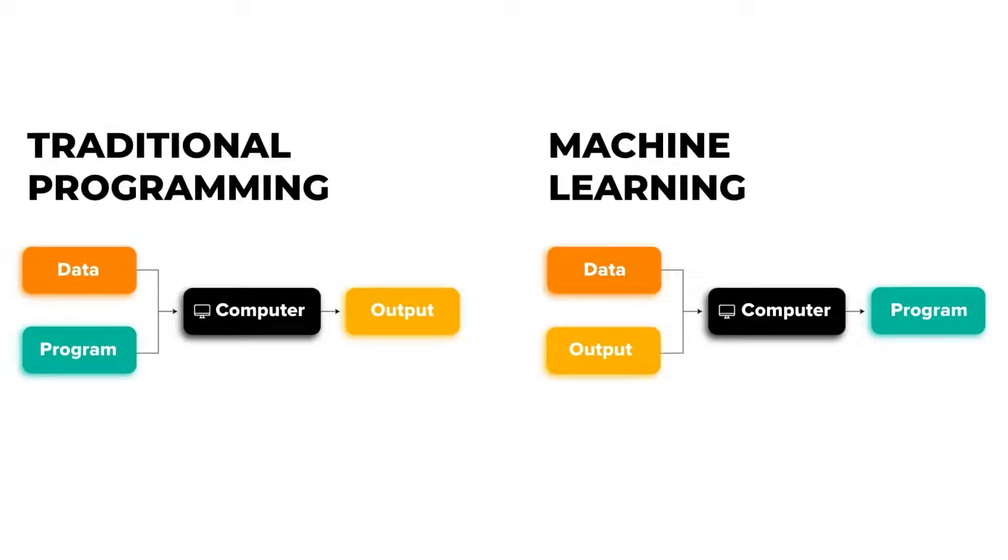Let's see what is the difference between traditional programming and machine learning. In traditional programming we have the data and we will write the program or the rules, then pass it to the machine to give us the output. In machine learning we invert this methodology. We will make the computer learn those rules from the data and the output.